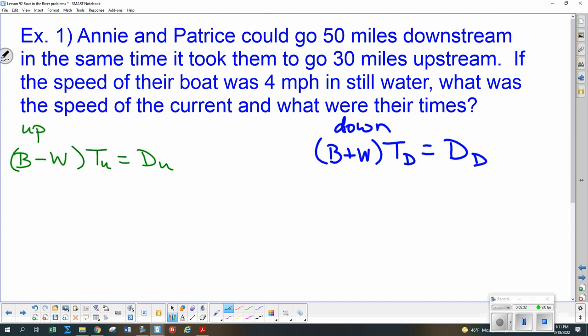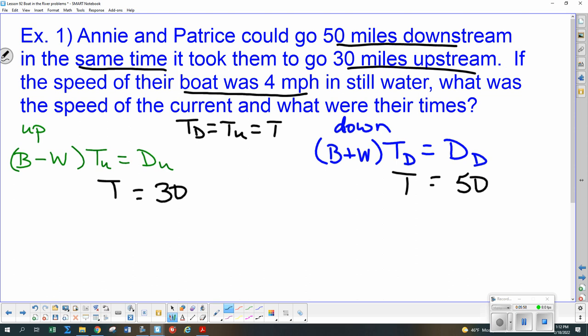Then you go along and you simply try to start plugging things in where they belong. So we have 50 miles downstream and 30 miles upstream. Those are both distances. They tell us the same time, so that means T_D and T_U are the same. So we might as well just call it T. And we know the boat goes 4 miles per hour. And still water just means if there wasn't any current, how fast could the engine make it go or how fast could we paddle?